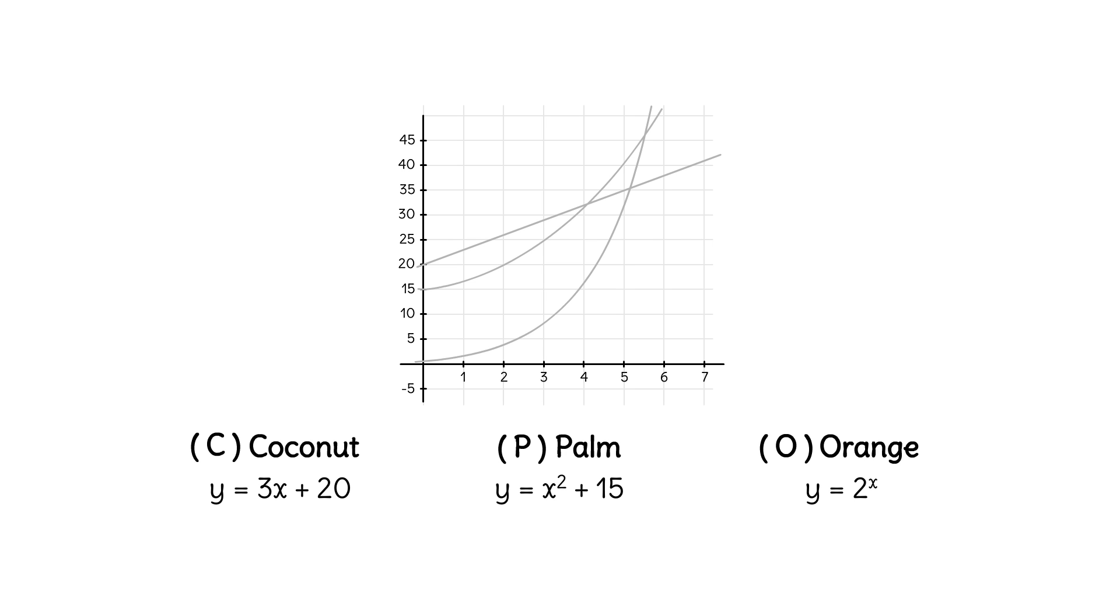Let's look at the equation for the turtles on Coconut Island. Is this equation linear, exponential, or quadratic? Y equals 3X plus 20 is a linear function with a slope of 3 and a Y-intercept of 20.